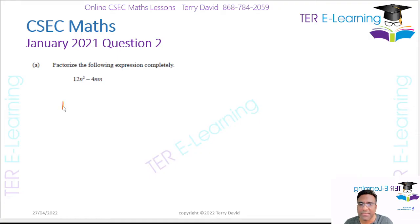So we have 12n² minus 4mn. Now, we need to use, in this case here, the HCF method. So the highest number that can go into 12 and 4 is going to be 4. The highest variable that can go into n² and this side here is n, so it's going to be 4n open brackets.